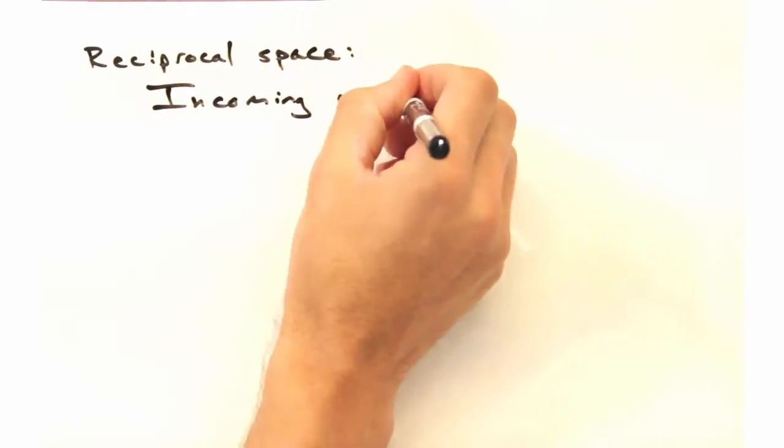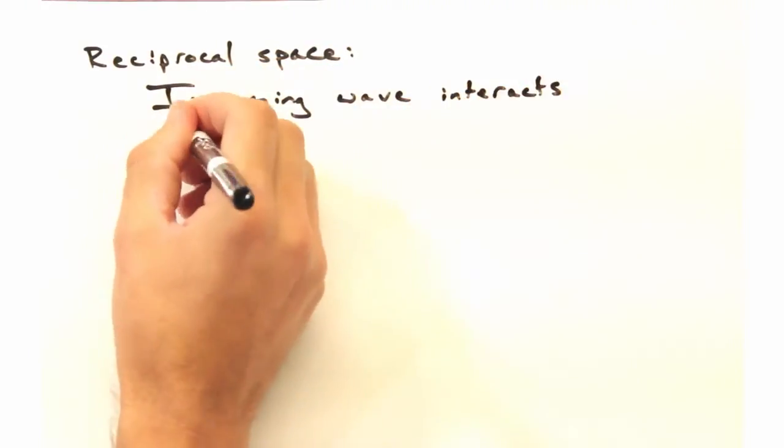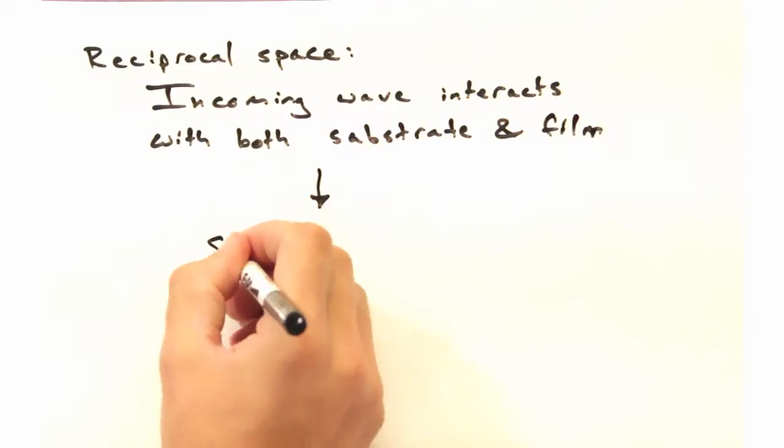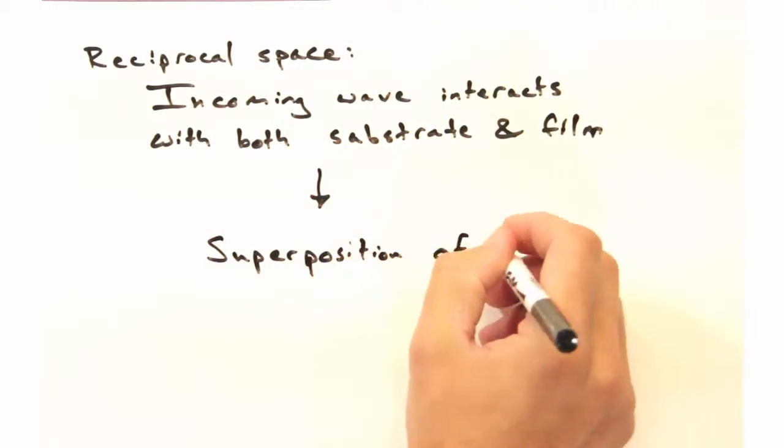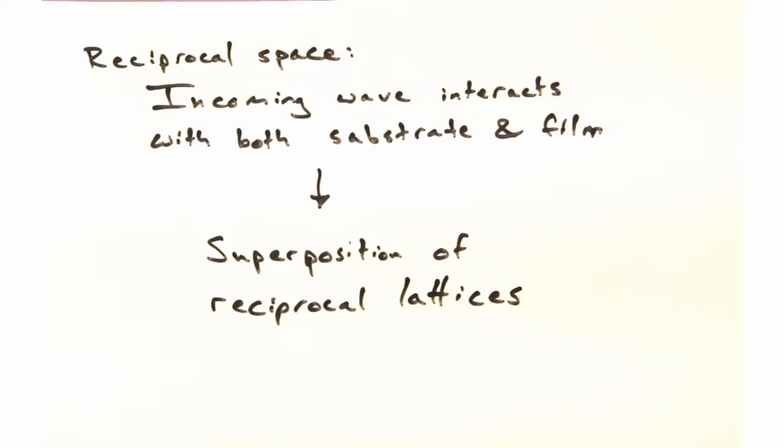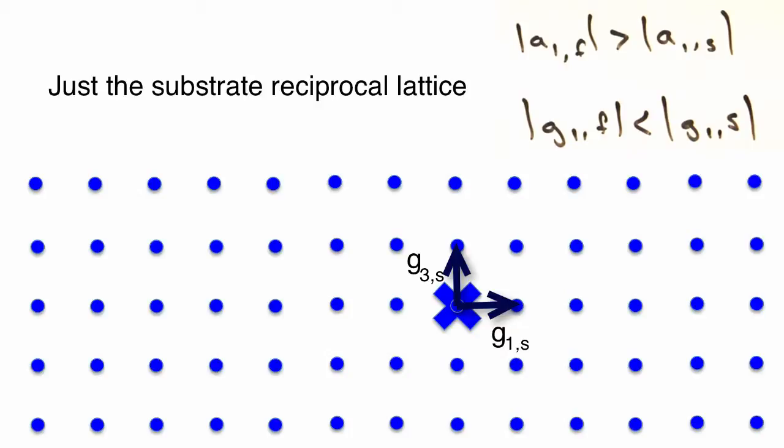If the film is relatively thin, an incoming wave will interact with both the substrate and the film at the same time. We can then create a reciprocal space made of the superposition of the thin film and substrate reciprocal lattices, with the G1 direction pointing to the right and the G3 axis pointing up.